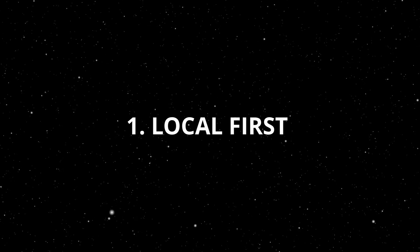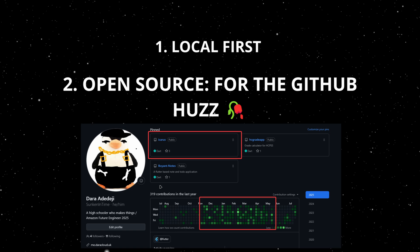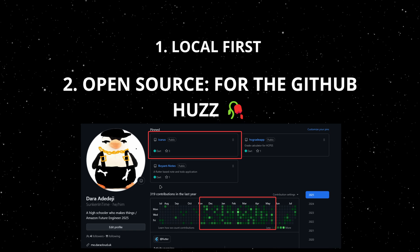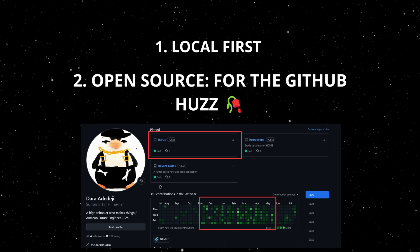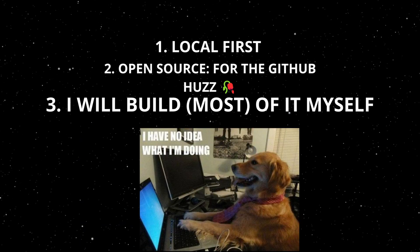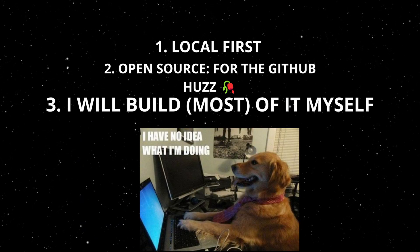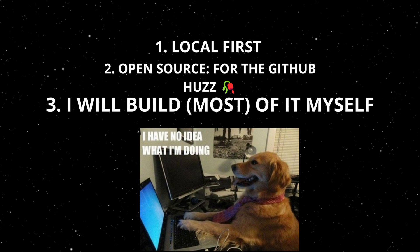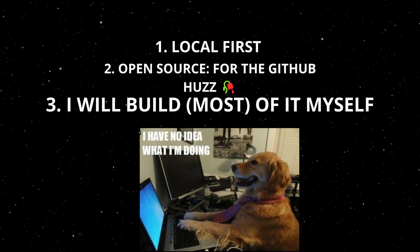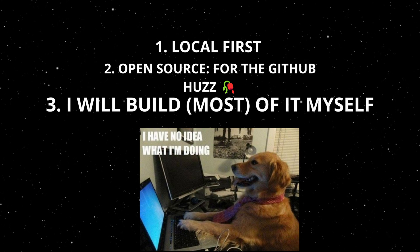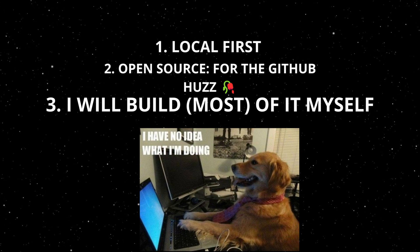To make things more fun, I decided to add three requirements. Number one, the app should be local-first, meaning everything should function without an internet connection. Two, it should be open source, just so I could flex it on my GitHub profile. And third, I will try to roll everything myself — meaning I won't use packages unless it's absolutely necessary for progress.